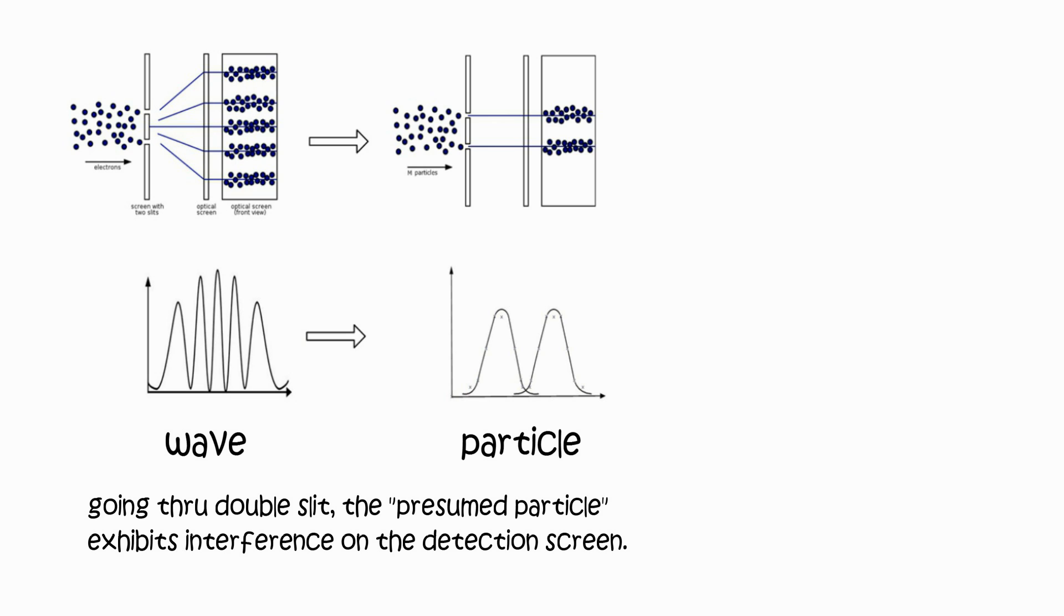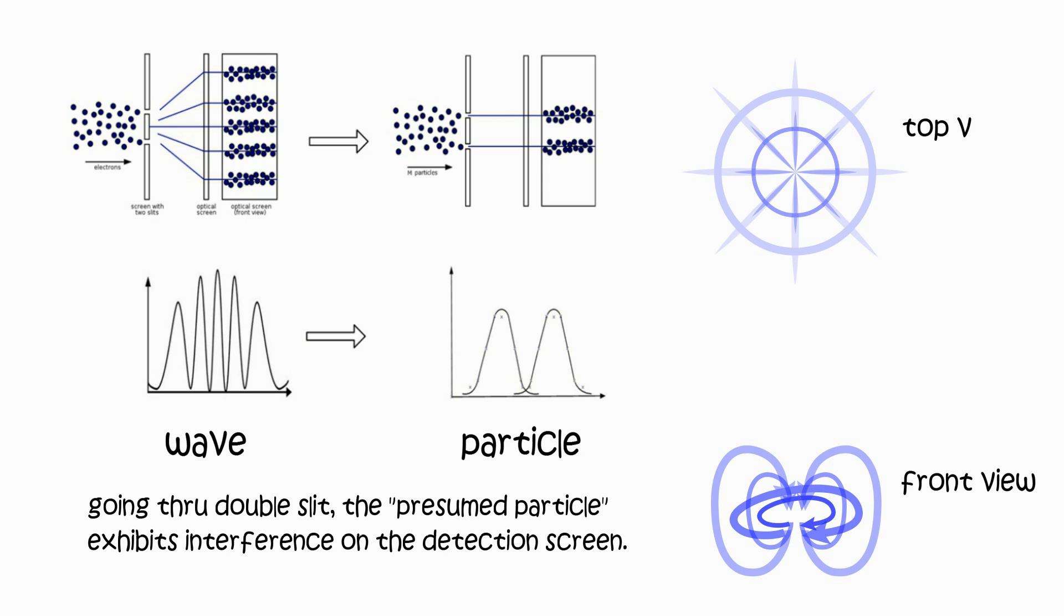Any detection at the slit will collapse the wave function. Electron is a configuration of momentum, field momentum in spin trajectory. Electron only focuses to particle form when reacted, for example connected to a proton.